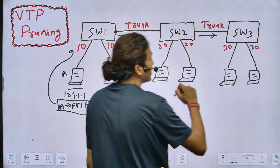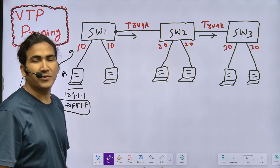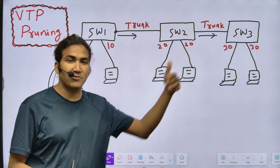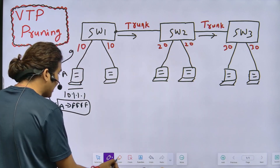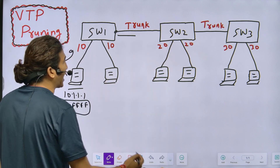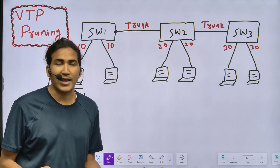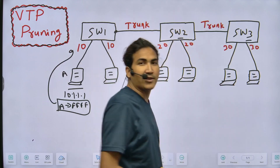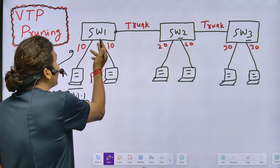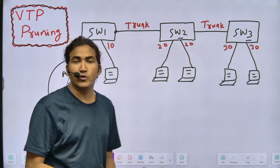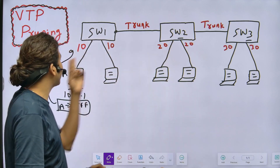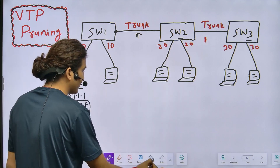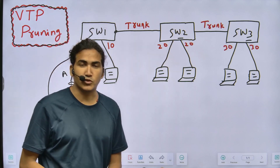Switch two will forward it to switch three. If we have lots of switches, broadcast messages of VLAN 10 will be flooded throughout the network. But is the VLAN 10 broadcast message required on switch number two or three? Not required, because there is no user in VLAN 10 on switch two or switch three. So VLAN 10 broadcast message is unwanted traffic on these trunk links.